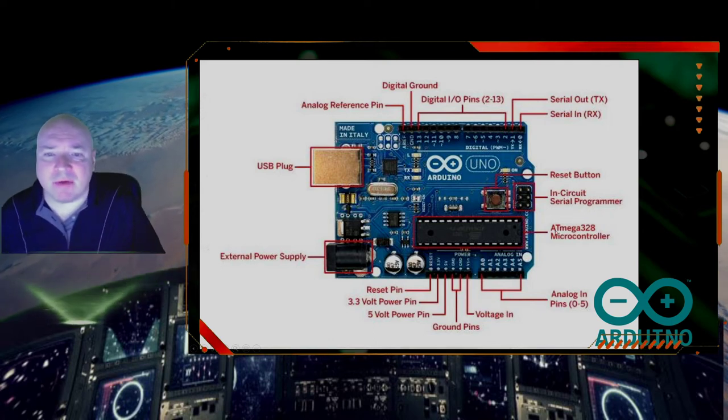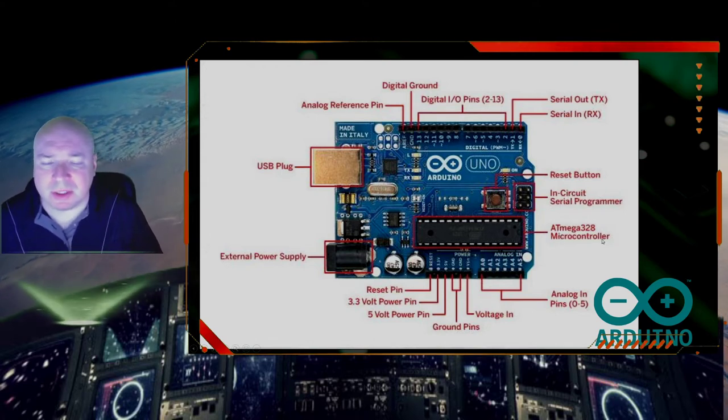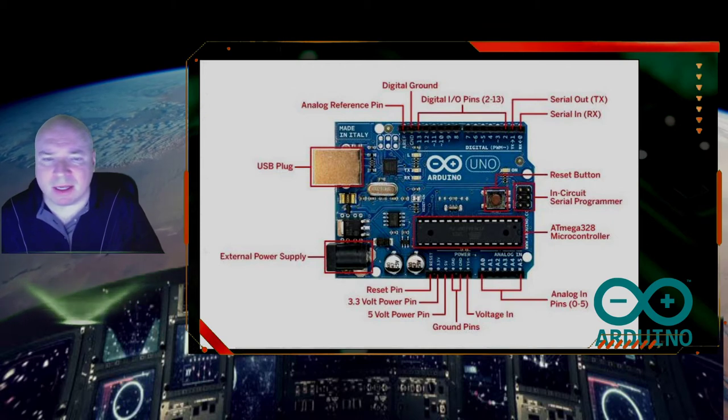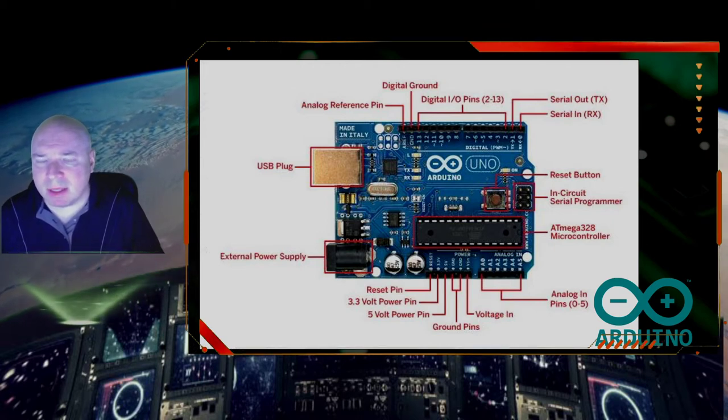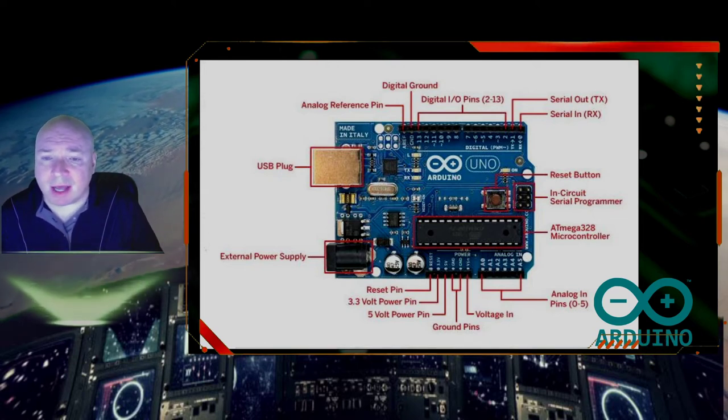So first, we have our AT Mega 328 microcontroller. This is our 16 megahertz controller that we talked about in our last video, and it can perform 16 million instructions per second. That's a lot.